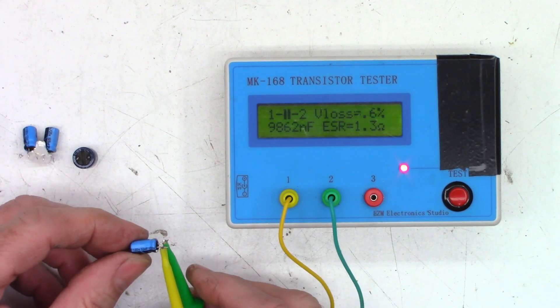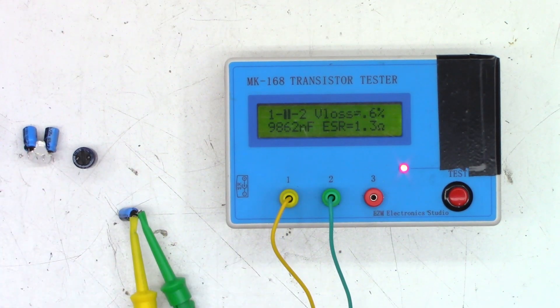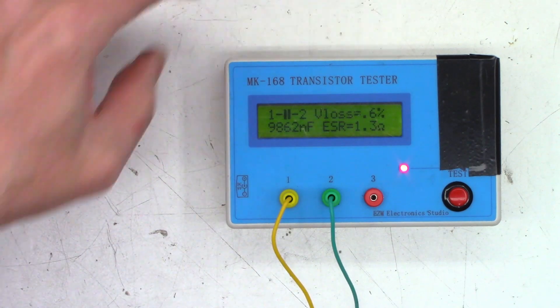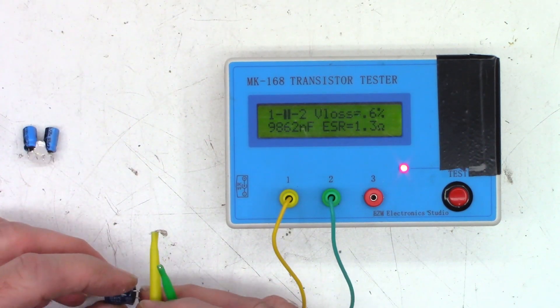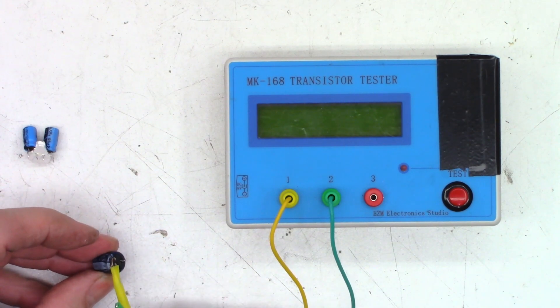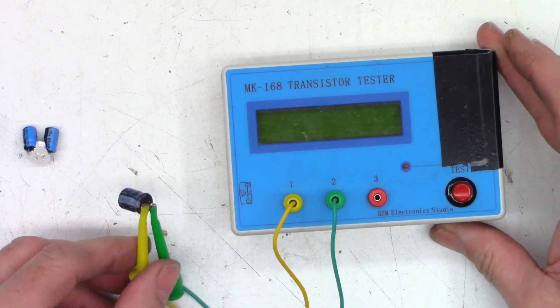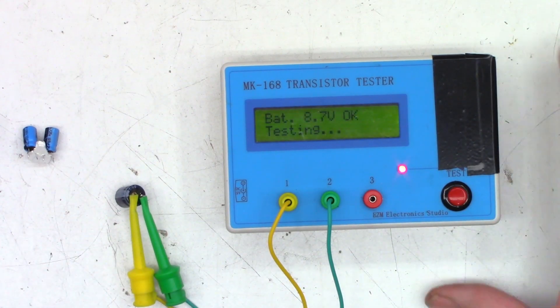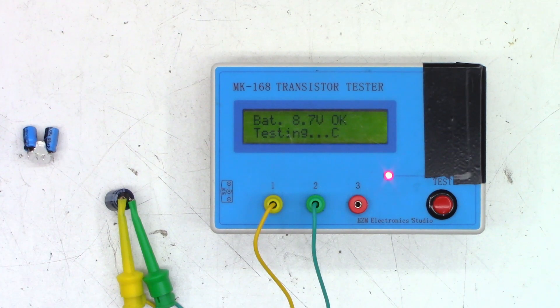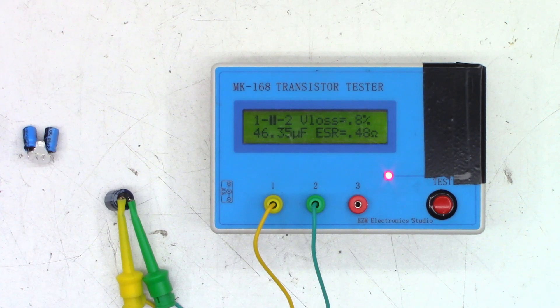The first capacitor, a 10 microfarad at 100 volts, measures 9.8 microfarads with an ESR of 1.3 and a V loss of 0.6 percent. I'm going to call that one good. The next one is a 47 at 100, which measures 46.35 microfarads with an ESR of 0.48, perfectly happy with that, and a V loss of 0.8 percent, once again totally fine in my book.